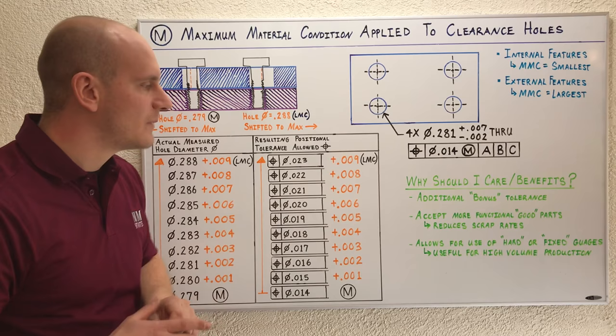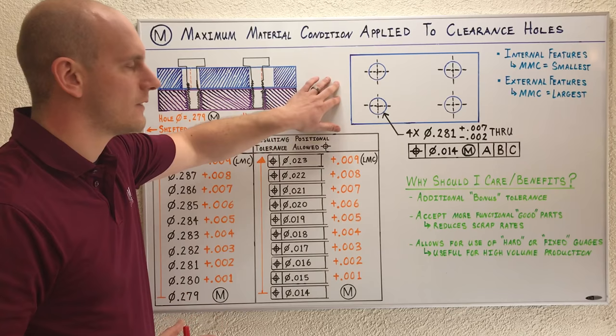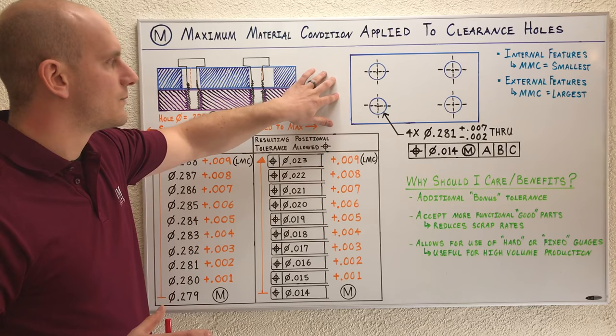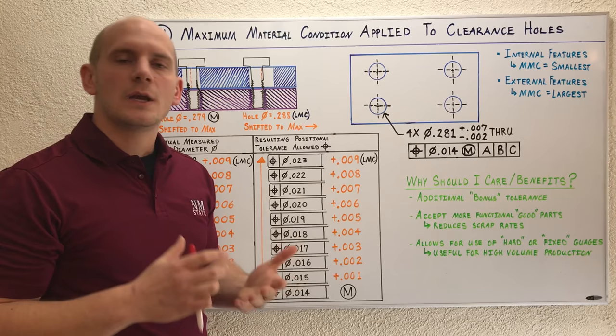The last benefit of using MMC with clearance holes—you actually allow for the use of hard or what we call fixed gauging. If you're in a high volume production situation where you're making 1,000, 10,000, 100,000, a million of these parts, you don't want to send a sample and force your inspector to inspect each individual feature for each part from your sample rate.